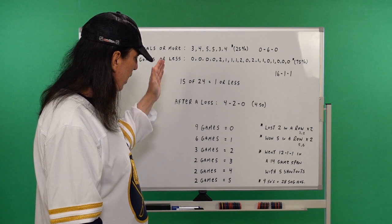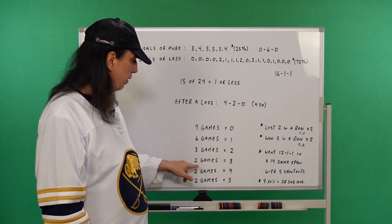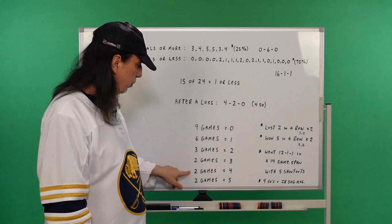How many he's let in? He's nine games, he's let in zero goals. Six games, he's let in one. Three games, he's let in two. Two games, he's let in three. Two games, he's let in four. And two games, he's let in five.